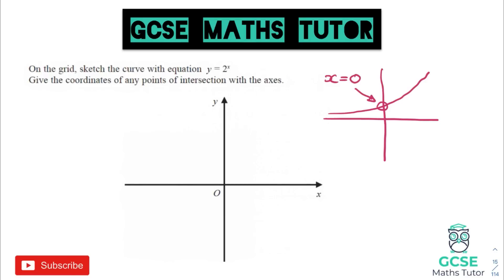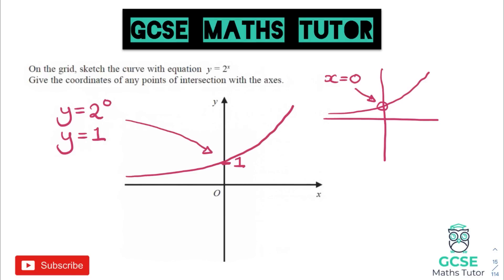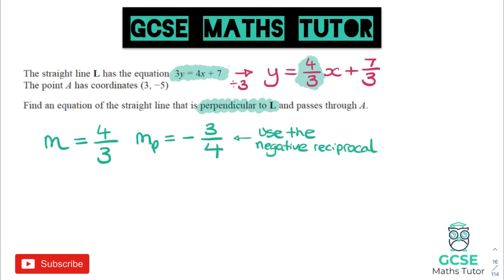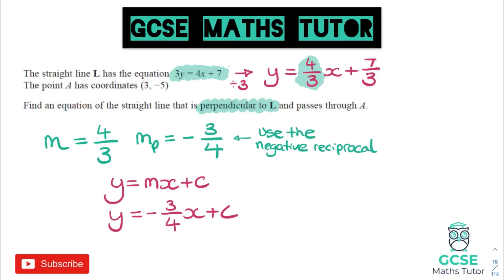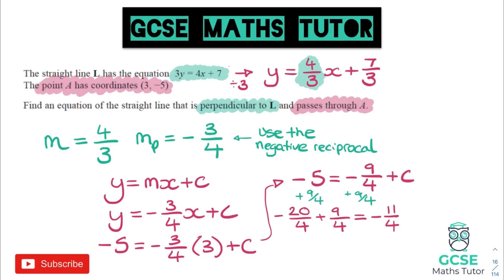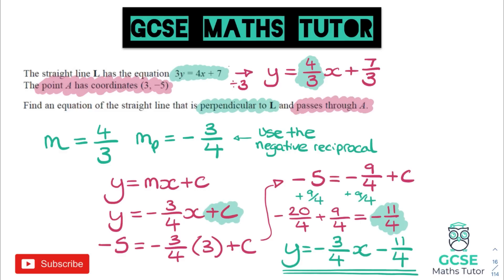If you have to draw an exponential graph, know what it looks like and to find the y-axis coordinate just set x equal to zero. If you have perpendicular lines, you need the negative reciprocal of the gradient — you may have to rearrange the equation of the line first. Here the gradient was 4/3, so the negative reciprocal is negative 3/4. Put that into y = mx + c and substitute any coordinate into the equation of the line — you'll need to rearrange to find c, which may involve some nasty fraction calculations on a non-calculator paper.